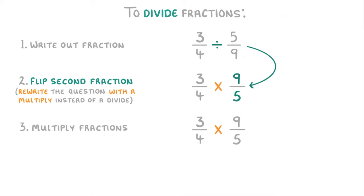Then we can just multiply the fractions together as usual. So here we do 3 times 9 to give us 27, and 4 times 5 to give us 20. So we have 27 over 20. And as a last step, we need to check if it can be simplified, which it can't. So the answer stays as 27 over 20.